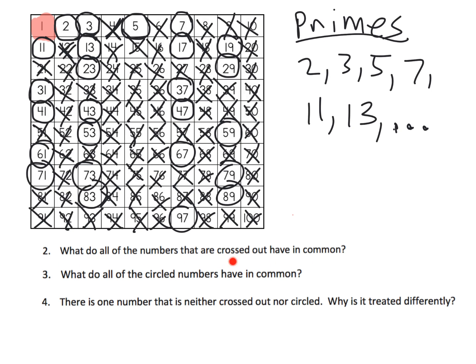What do all the numbers that are crossed off have in common? They're composite — they are not prime. What do all the circled numbers have in common? They're prime. And then the one that is neither crossed out nor circled — that's the 1. Why is it treated differently? It's treated differently because it's neither prime nor composite. 1 is neither prime nor composite.